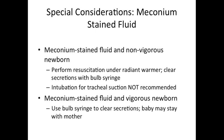If you encounter meconium-stained fluid and a non-vigorous newborn, perform resuscitation under the radiant warmer and clear secretions with a bulb syringe or DeLee catheter. Intubation for tracheal suction is not recommended in the newest NRP guidelines. If the fluid is meconium-stained but the newborn is vigorous, you may use a bulb syringe to gently clear secretions.